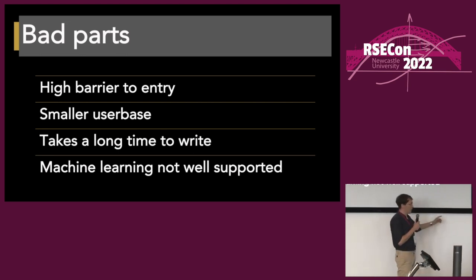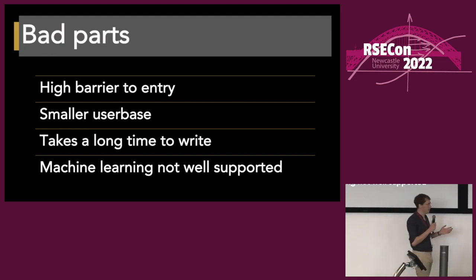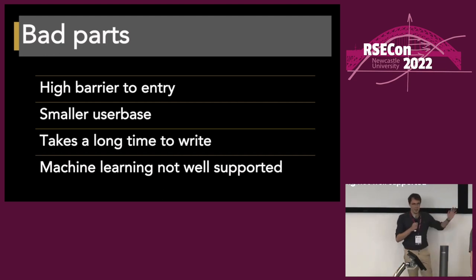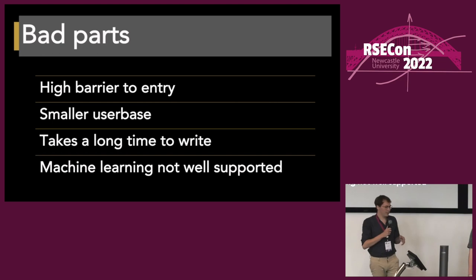For specific scientific applications — most notably machine learning — there just aren't the libraries that already exist within the Rust ecosystem. That said, you'd be absolutely bonkers not to just use Python for machine learning anyway.